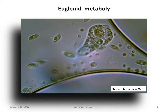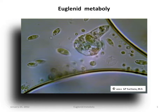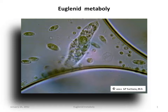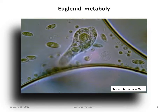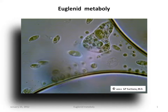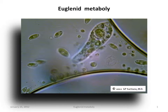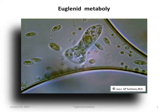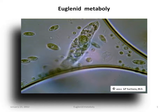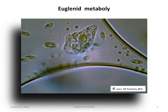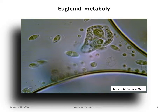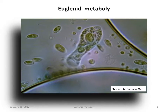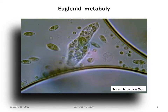The term metaboly is a descriptive one used in reference to the undulating, squirming, contractile, shape-changing type of movement common to many euglenid organisms. In this initial video, the nucleus of the organism is visible as a membrane-bound semispherical object midway in the length of the cell.